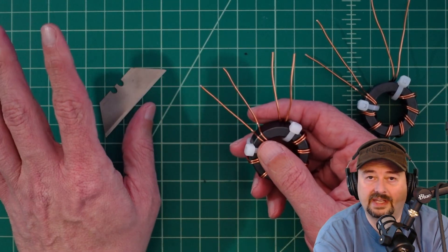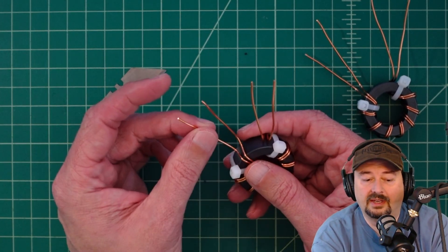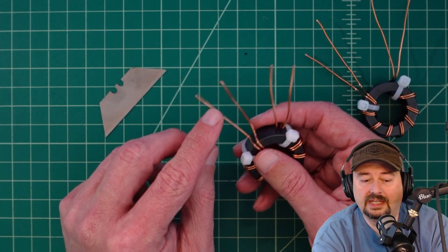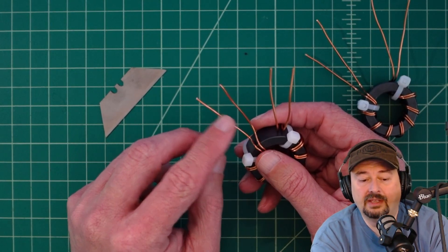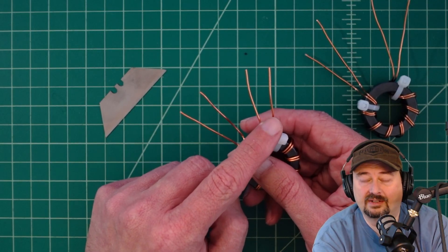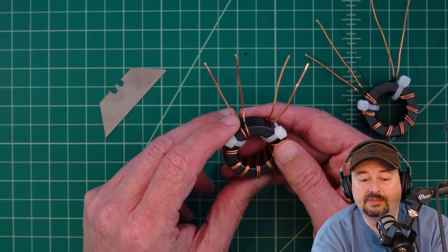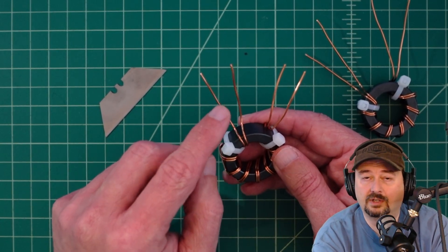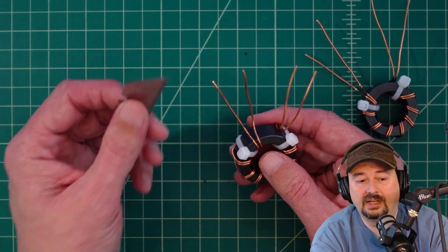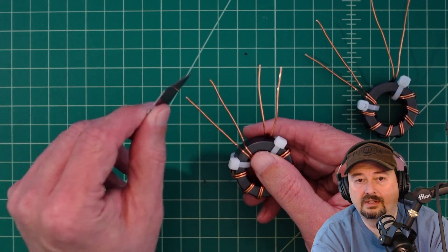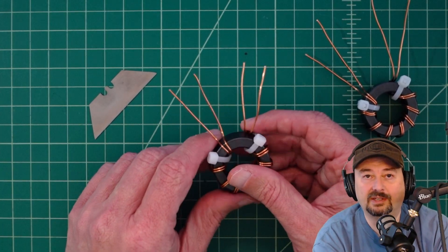You want to make sure that you scrape all the enamel off your leads. You want that enamel off so you can get a good connection, good conductivity. The enamel acts as an insulator so if you don't get it off you're going to have problems. Definitely make sure you pay attention and do a good job scraping that off.